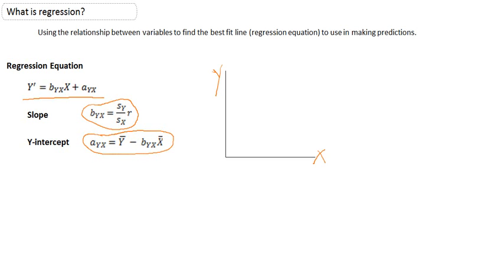So, wherever the line crosses, our x is zero, and we need to know that value for y. And that is what our y-intercept is. So, if we, let's say, for example, have a line that looks like this, then this point right here would be our y-intercept.